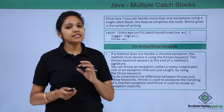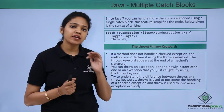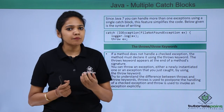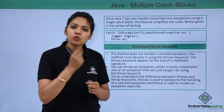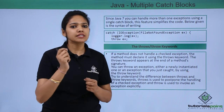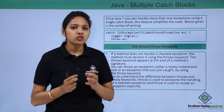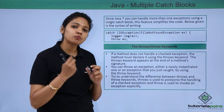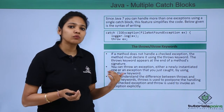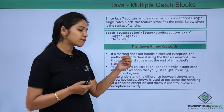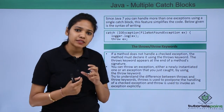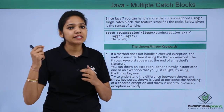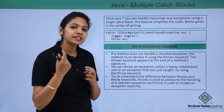Let us understand when you write multiple catch blocks, how these exceptions are thrown and handled. A method throws the exception, but there are certain keywords — throw and throws — in exception handling. The throw keyword is written inside a method and is used to provide custom exceptions, whereas the throws keyword is used in the method declaration. With throw, you use the new keyword inside the method body; with throws, you follow the method declaration with the exception class name.